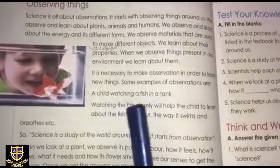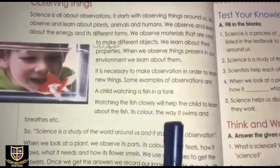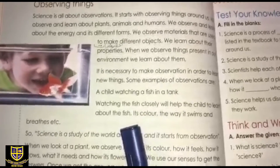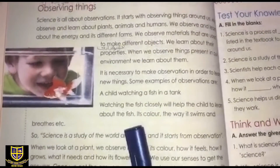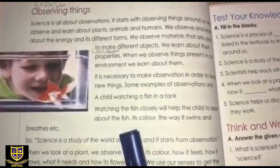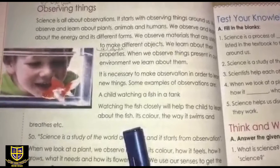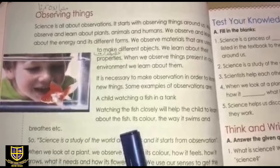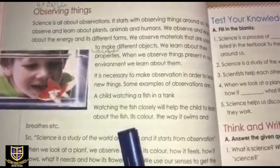Some examples of observations: a child watching a fish in a tank. Watching the fish closely will help the child learn about the fish. Now you can see this in the picture — there is a child watching a fish in a tank. He is observing something in order to learn something, watching the fish closely.